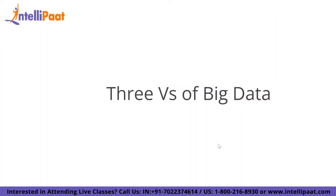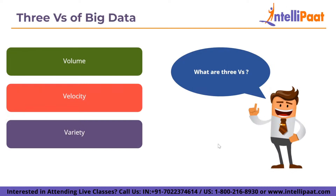Now let's discuss the three V's of big data. The first one is volume — the amount of data is critically important. With big data, you must process large amounts of low-density unstructured data. This can include unvalued data sets such as Twitter data feeds, click streams on a web page or mobile app, or sensor-enabled equipment — amounting to tens of terabytes for some organizations and hundreds of petabytes for others.